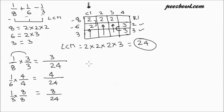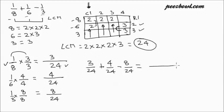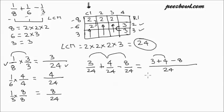Now addition and subtraction becomes very simple. Whenever we are adding or subtracting fractions with the same denominator, we write 24 as the common denominator and combine all the numerators: 3 plus 4 minus 8. That is 3 and 4 is 7, then 7 minus 8 divided by 24, which is nothing but minus 1 upon 24. Because 8 is greater than 7, the minus sign is here.